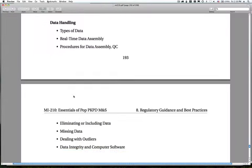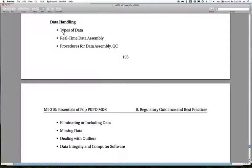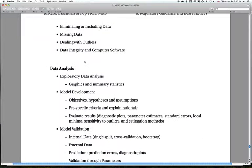On the data handling section, the guidance suggests that we should consider and discuss the types of data that we're using. Potential for real-time data assembly. Procedures for data assembly in QC. How to eliminate or include data and to document what sort of decisions are made there. Dealing with missing data and outliers. Data integrity and computer software. All of these things are mentioned as issues. We've talked about several of these in the data lecture. So I'm not going to repeat that. But we'll talk a little bit more about data integrity computer software in a few minutes.